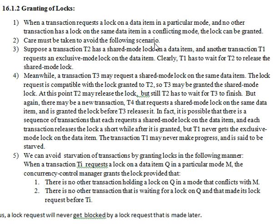Here is one scenario. T2 transaction has a shared mode lock on data item Q. Now T1 is coming into picture, requesting an exclusive mode lock on the same data item Q. Observe: T2 is already holding a shared lock, and T1 is requesting exclusive. So T1 will not get grant permission from CCM — T1 has to wait for T2 to release the shared mode lock. Once T2 releases the data item, T1 will get the chance to use it.